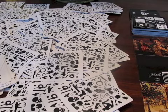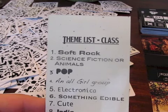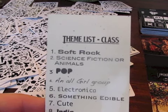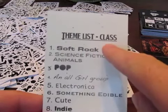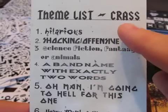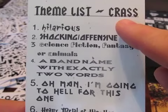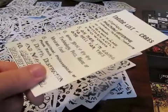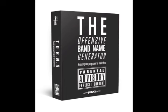Finally, decide what type of game you would like to play. If you would like to play an inoffensive game where the goal is to come up with plausible band names, use the theme list labelled Class. If you would like to play an offensive game, use the theme list labelled Crass. Put the chosen list in front of the player who owns the game, and put the other list back in the box.